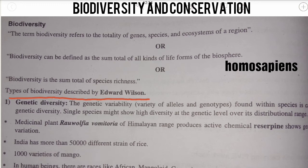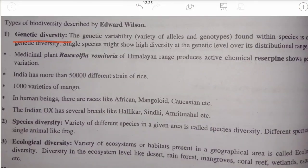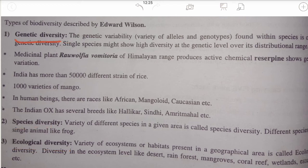Edward Wilson described three types of biodiversity: genetic diversity, where diversity occurs at the genetic level; species diversity, diversity at the species level; and ecological diversity, diversity at the ecosystem level. These are the three types of biodiversity given by Edward Wilson.